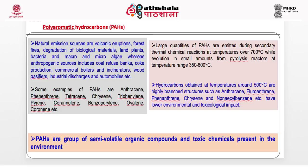Large quantities of PAHs are emitted during secondary thermal chemical reactions at temperatures over 700°C, and many industrial processes exceed this temperature. Hydrocarbons obtained at around 500°C produce highly branched structures such as anthracenes, fluoroanthracenes, and phenanthrenes, which have lower environmental and toxicological impacts. These are semi-volatile organic compounds and are toxic chemicals studied under the volatile organic compounds category.